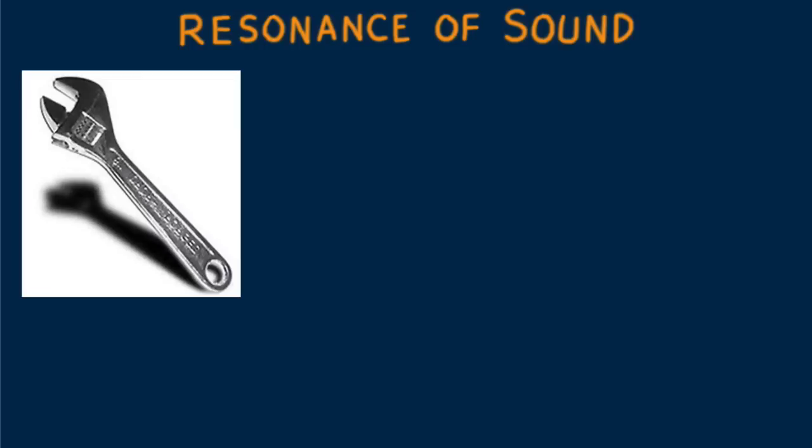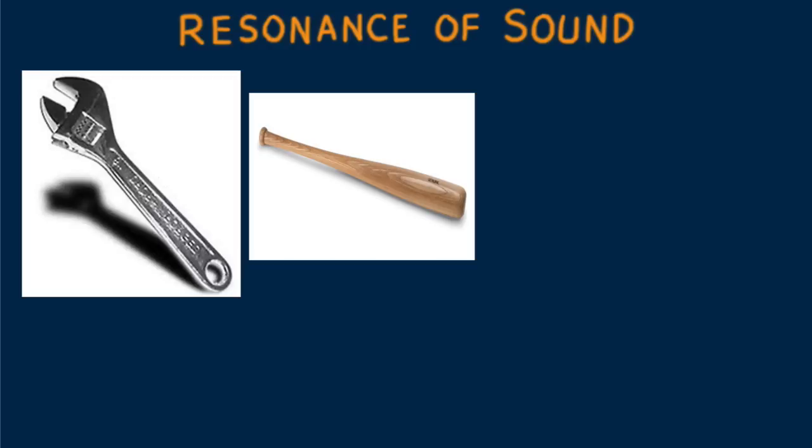When someone drops a wrench on a concrete floor, we're not likely to mistake its sound for that of a baseball bat hitting the floor. This is because the two objects vibrate differently when they strike the floor.